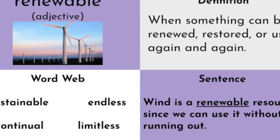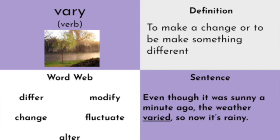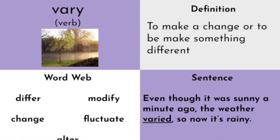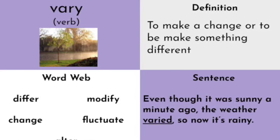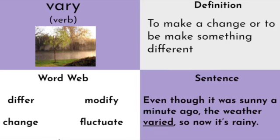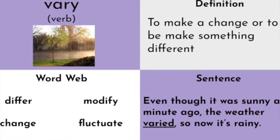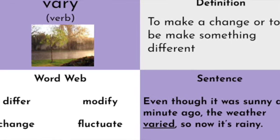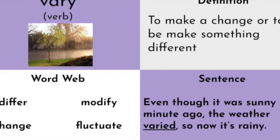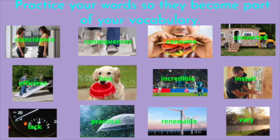Our last word is a verb: vary — V-A-R-Y, like different, not V-E-R-Y meaning a lot. When you vary something, you make a change or make it different. Word web words: differ, modify, change, fluctuate, and alter — all words that can be used interchangeably with vary. Our sentence: even though it was sunny a minute ago, the weather varied, so now it's raining. Those are our words, ladies and gentlemen. Keep working at them, practice them all week, good luck with your quiz, and I am very proud of your vocabulary brain growing.